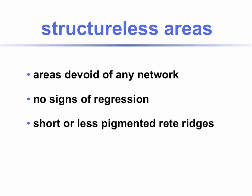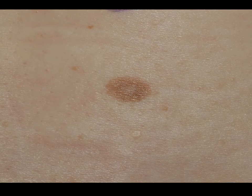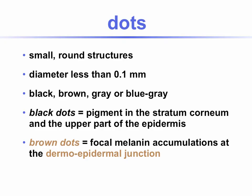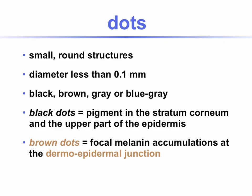Structureless areas are areas devoid of any network. There is no sign of regression associated, and the structureless area is not lighter than the surrounding skin — it is the same color, but there is no visible dermoscopic structure. This corresponds to shortened or less pigmented rete ridges. Clinically and dermoscopically, at the periphery you see a very regular, patchy pigment network, and in the center you see a structureless area.